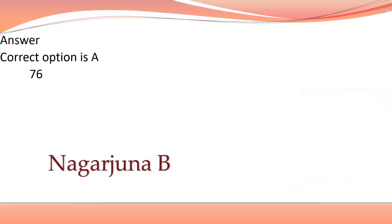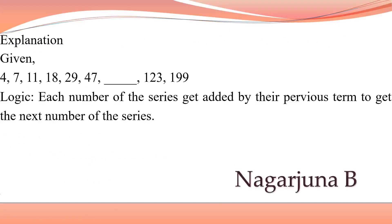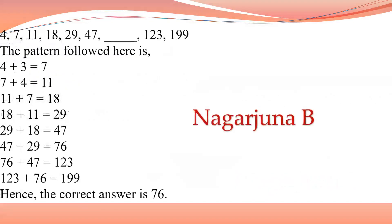How do we get this answer? The series given requires you to add the previous term to get the next number. That means each number of the series is arranged such that when we add it to the previous term, we get the next number. When you perform the calculation this way, you will get the missing number.